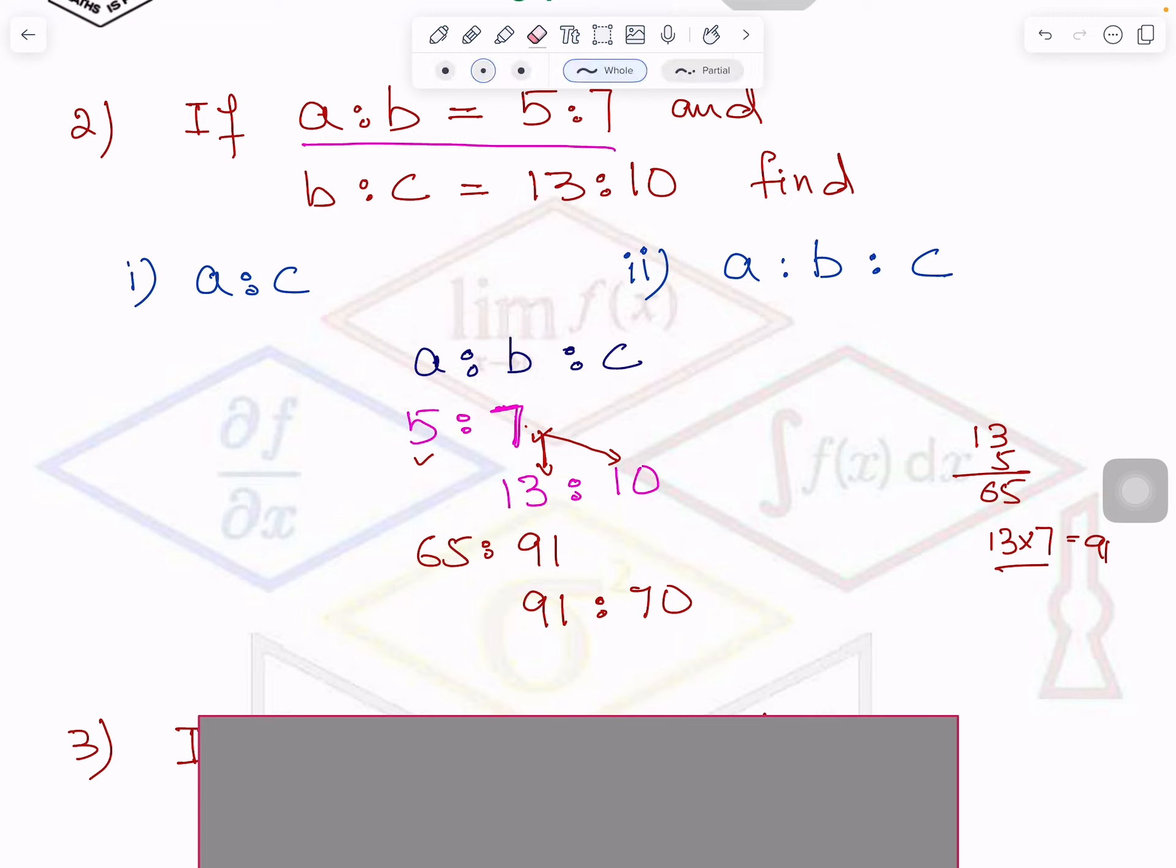And because 91 is same, so I can write here, this is my A, B because B is same and C. So it is 65 is to 91 is to 70.